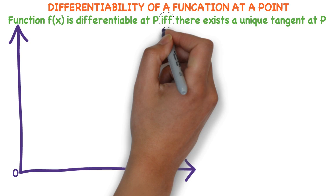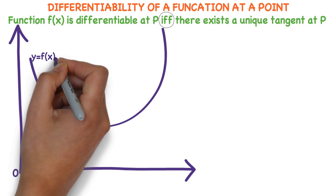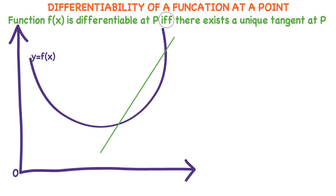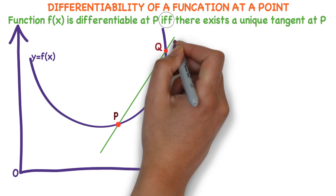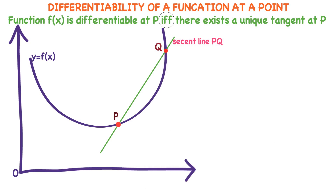Now, consider the coordinate axis. O is the origin. Take the curve y equals f of x. Draw a line — observe this line. This line cuts the curve at two points. Name them P and Q. This line PQ is called the secant line PQ, because this line cuts the curve at two points.